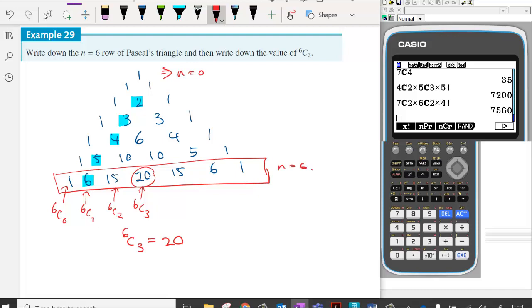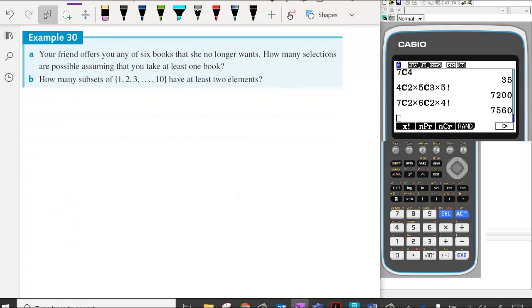So it's still pretty straightforward. Now we're going to look at applying. So our first example, your friend offers you any of 6 books that she no longer wants. How many selections are possible assuming you take at least one book? So that means that at least one means that we're looking at the set including 1, 2, 3, 4, 5, 6, or probably the not including 0 is the easiest.